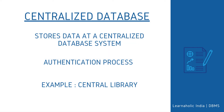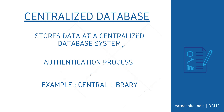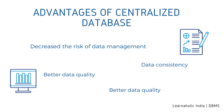Let's start with centralized database. It is the type of database that stores data at a centralized database system. It allows users to access the stored data from different locations through several applications. These applications contain an authentication process to let users access data securely. An example of a centralized database can be a central library that carries a central database of each library in a college or university. Some advantages of centralized database are: it decreases the risk of data management, meaning manipulation of data will not affect the core data. Data consistency is maintained as it manages data in a central repository. It provides better data quality, which enables organizations to establish data standards. It is less costly because fewer vendors are required to handle the data sets.